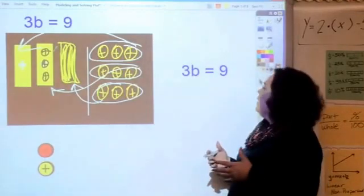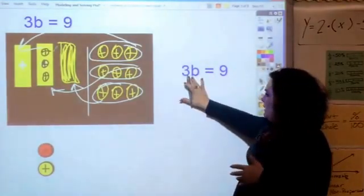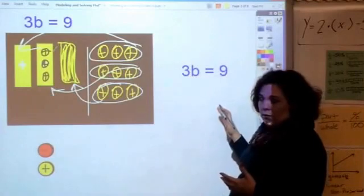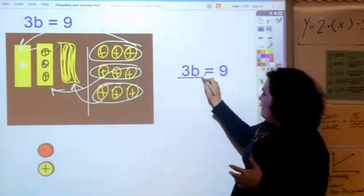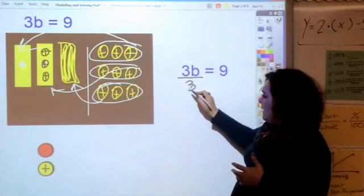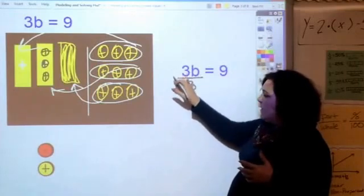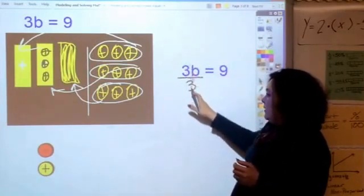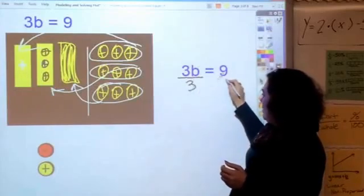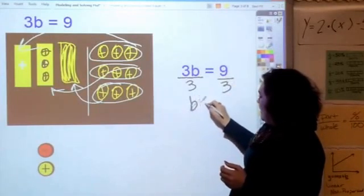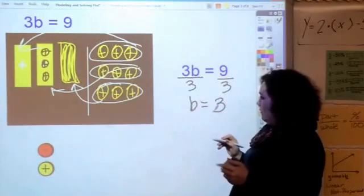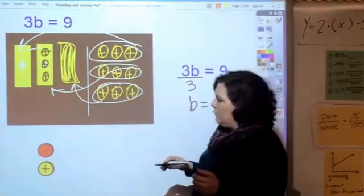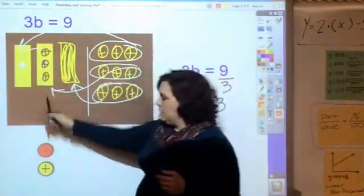Now let's look at it mathematically. The opposite of multiplication is division, so I'm going to divide by three. Three divided by three gives me one b. Whatever I do to this side I have to do to this side, so b equals three. And that's what I showed.